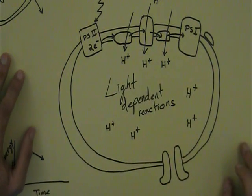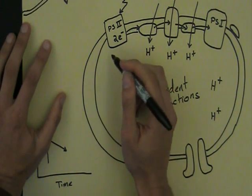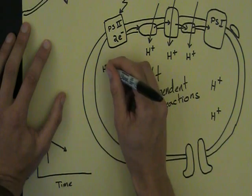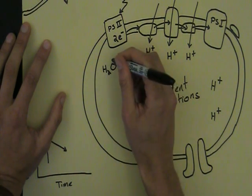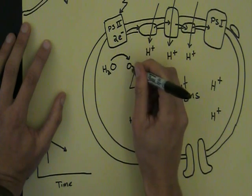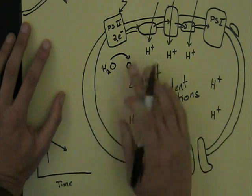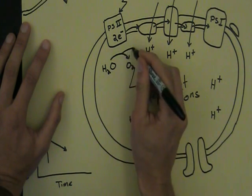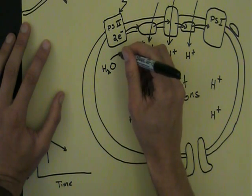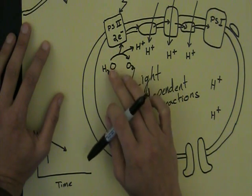Now these electrons have obviously moved all the way over here, they're going to need to be replaced. So the way the electrons are replaced is through the splitting of water. Water molecules, H2O, are split into molecular oxygen, O2. Obviously we need two water molecules to enable this to happen. Hydrogen ions and electrons. So this is where the electrons are coming from.